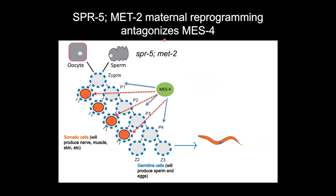What has to happen to establish somatic versus germline cell fate is the balancing activity of MES4 and SPR5 and MET2, ensuring that these two transcriptional programs become distinct and you get proper cell fate specification. The story I'm going to tell you today is what happens when this breaks down, in the context of SPR5 and MET2 mutants that lack this maternal reprogramming.